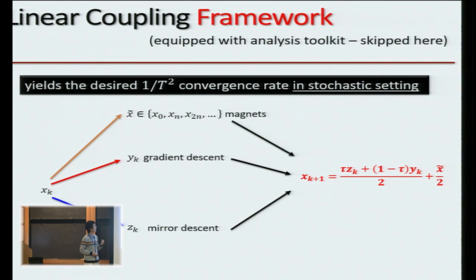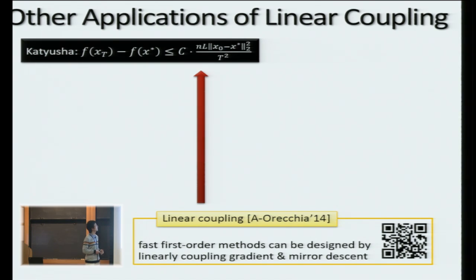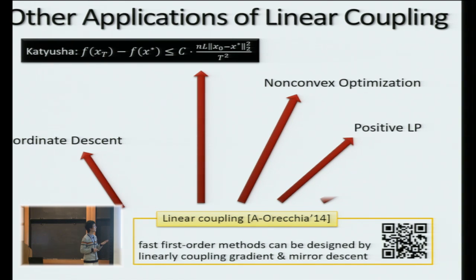So this is, like, from a very high level, what's the meaningfulness of this linear coupling framework and how it roughly implies this accelerated convergence rate in the stochastic setting. So it has other applications. And I will conclude here for today's talk. Thank you.